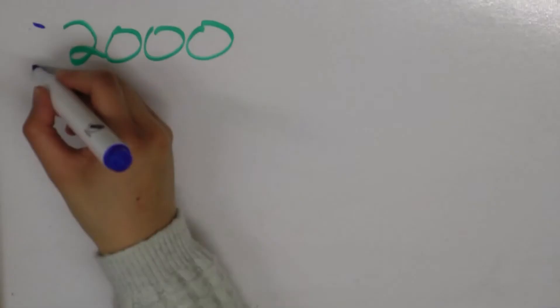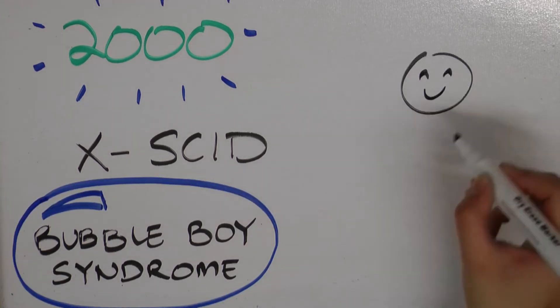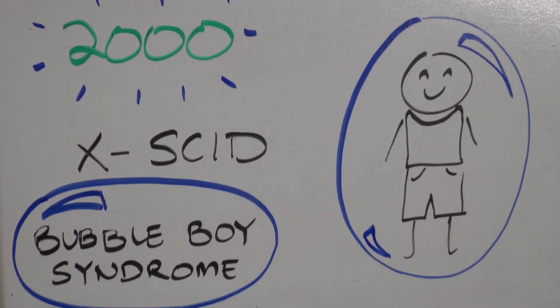The first therapeutic cure using gene therapy was for the X-SCID disease in 2000. Doctors successfully used gene therapy to treat severe combined immunodeficiency disease, also known as Bubble Boy Syndrome.